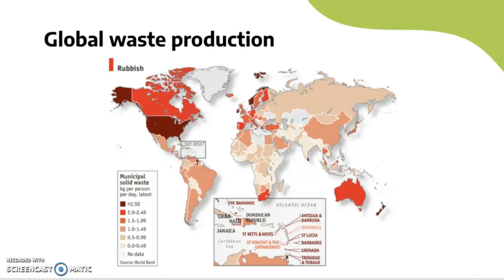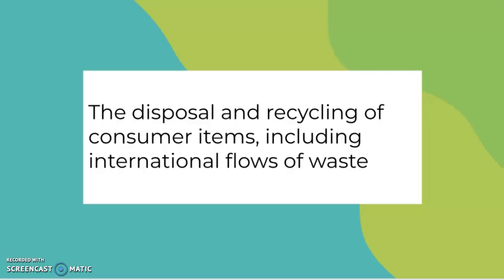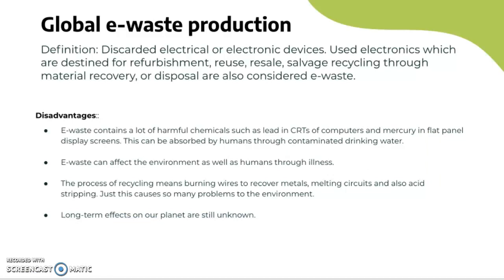The global waste flows show the top plastic exporters are the US, Japan, Germany, and the UK. The top importers are Malaysia, Thailand, Vietnam, and Hong Kong. E-waste is defined as discarded electrical or electronic devices — used electronics destined for refurbishment, reuse, sale, salvage, recycling, or disposal. The disadvantages are significant: e-waste contains harmful chemicals such as lead in CRTs and mercury in flat panel displays, which can contaminate drinking water. The recycling process involving burning wires, melting circuits, and acid stripping causes severe environmental problems.